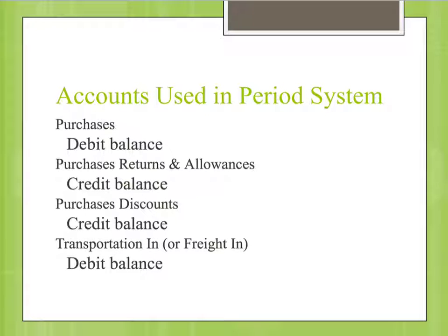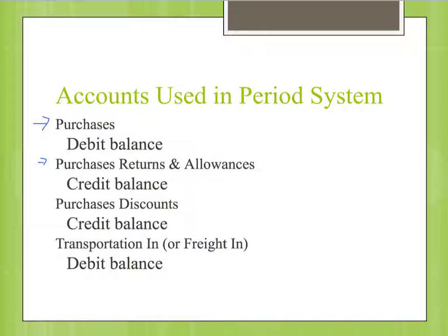In the periodic system, we have several accounts that we are adding to our list. We have an account called Purchases — that's where the items we buy to sell are going to go, and it has a debit balance. We have Purchase Returns and Allowances, which carries a credit balance. We have a Purchase Discounts account, also a credit balance. And we have Transportation In, or Freight In, which is a debit balance.